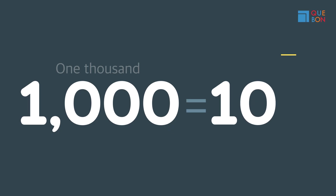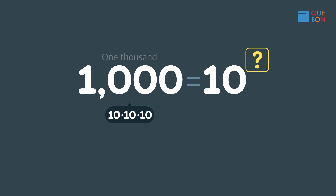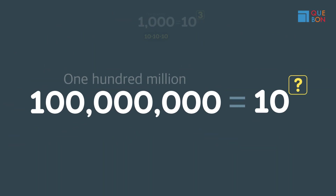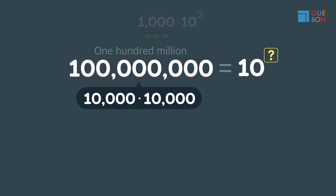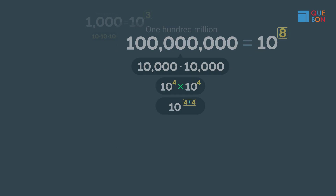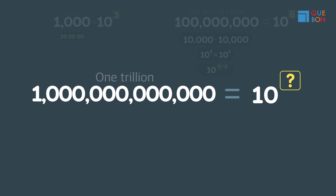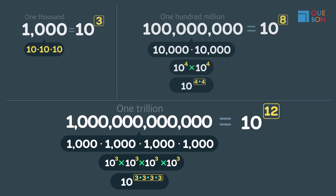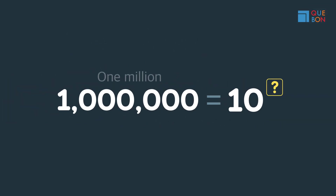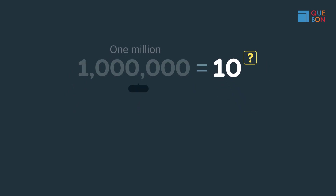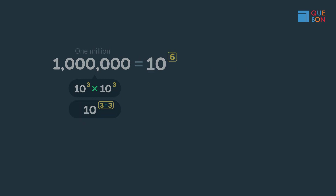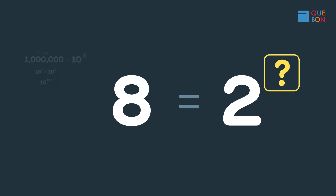Let's try solving some questions. One thousand is ten multiplied by itself how many times? Three. One hundred million is ten multiplied by itself how many times? Eight. One trillion is ten multiplied by itself how many times? Five. One million is ten multiplied by itself how many times? Six. Eight is two multiplied by itself how many times? Three.